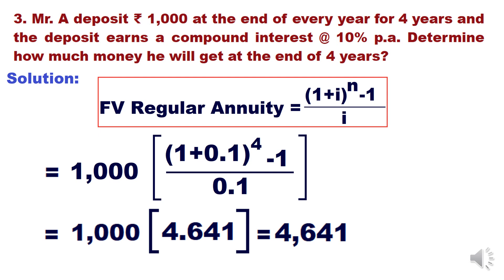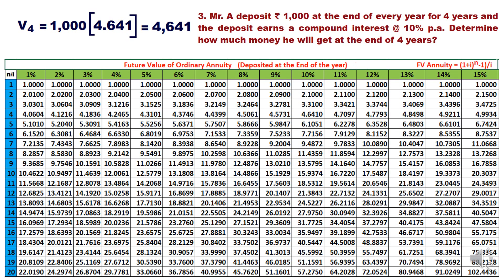This is the future value of ordinary annuity — also called regular or deferred annuity — table. For our example of 1000 deposited for four years at 10%, we look up 10% and four years in the table. The highlighted value is 4.6410, which matches the 4.641 we calculated using the formula. So without using the formula you can use the table to find the answer. This is how you calculate future value of money deposited annually at the end of the year.